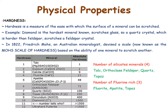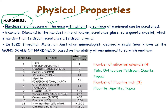Here we can see the physical properties of a particular mineral. So what are the physical properties? The first physical property we are dealing with is hardness. Hardness is a measure of the ease with which the surface of a mineral can be scratched — that is, how easily a mineral surface can be scratched is the measure of hardness.